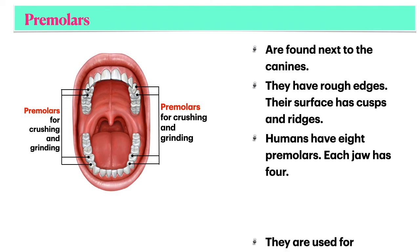Humans have eight premolars. Each jaw has four. Premolars are used for crushing and grinding food.